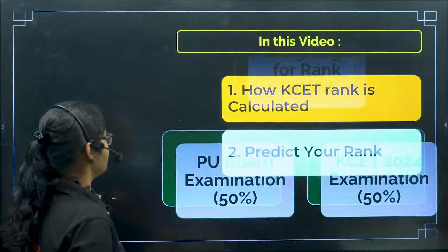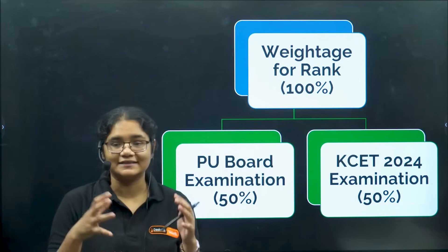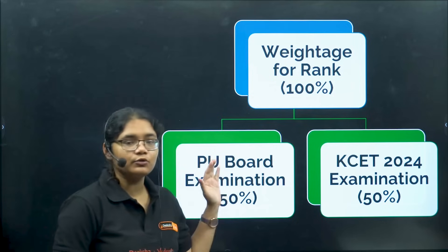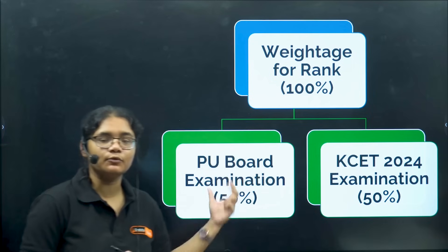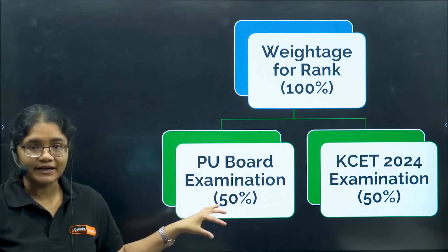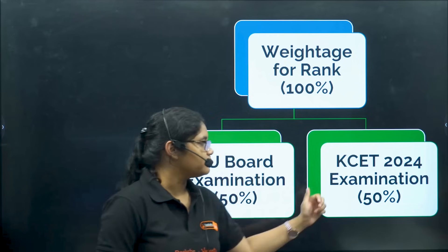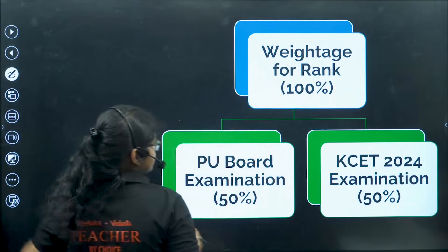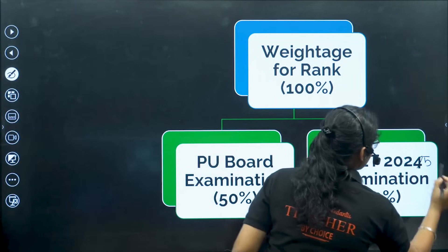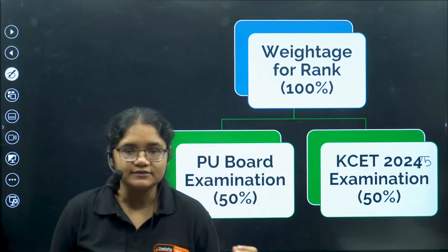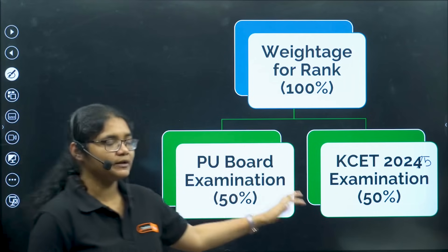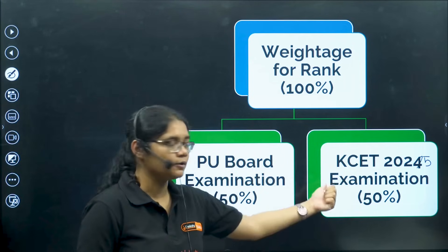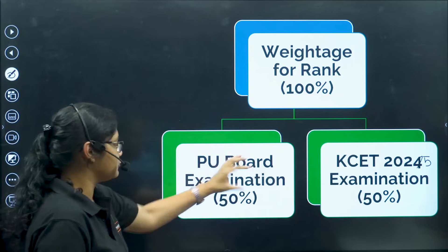The KSA rank depends on two important factors. The first one is your PU2 or any Class 12th board examination mark, from which 50% weightage is taken. The second one is your KSA 2025 examination. Since the answer key has also been released, many of you would already know how much you will be getting in your KSA 2025 examination. So we have got both the marks here.